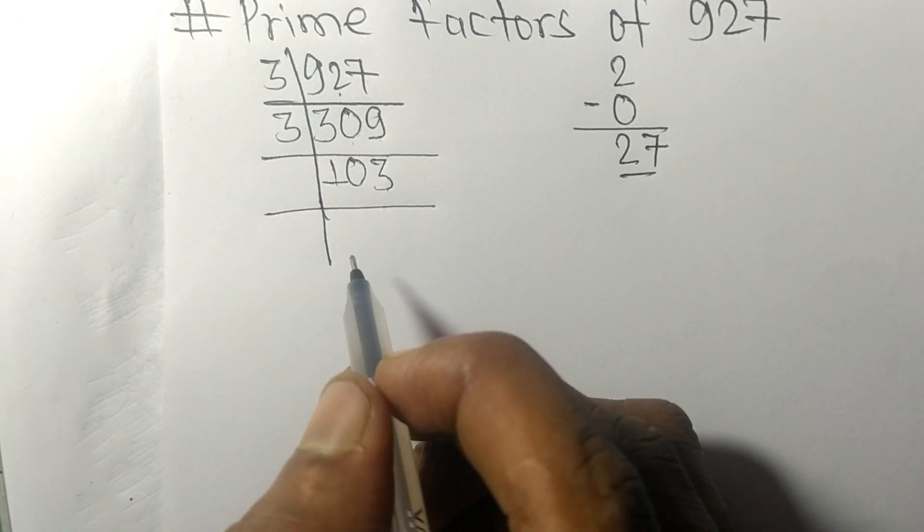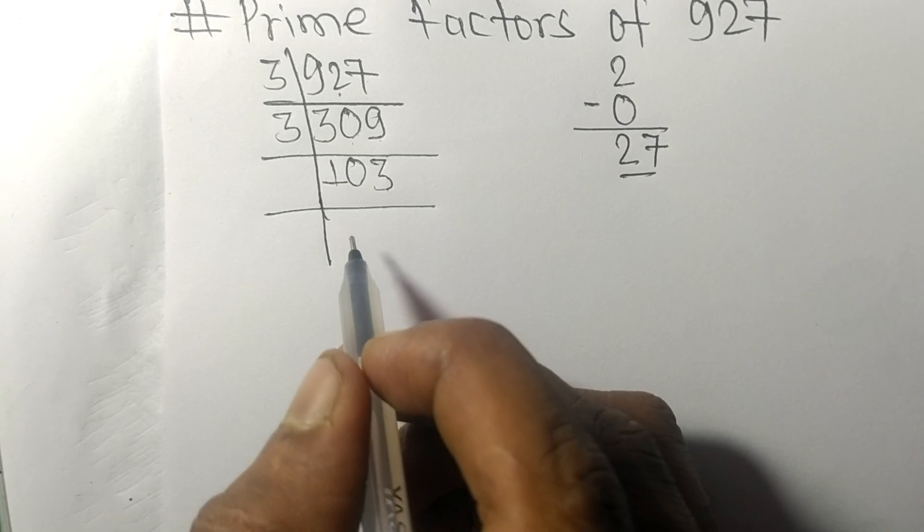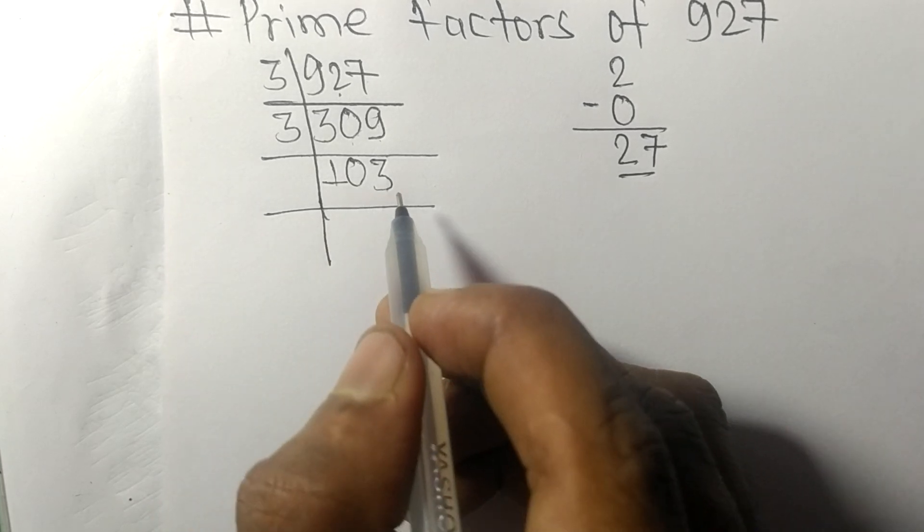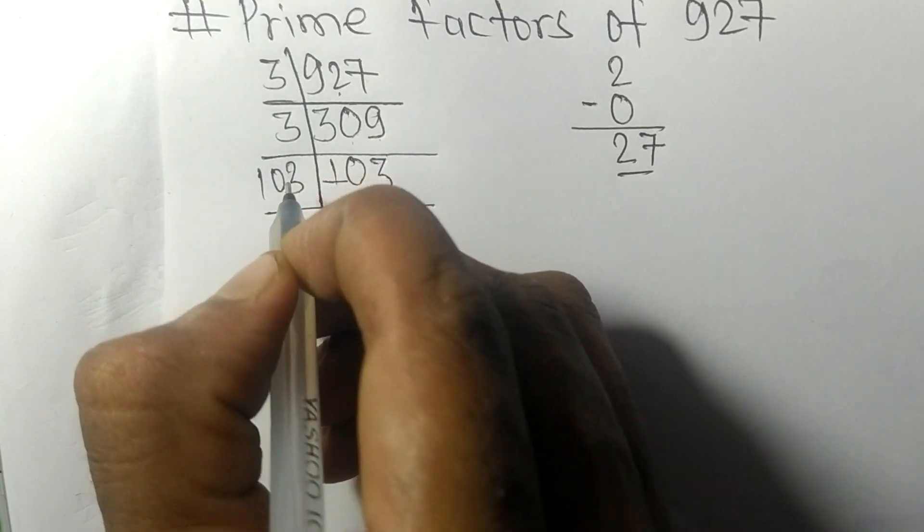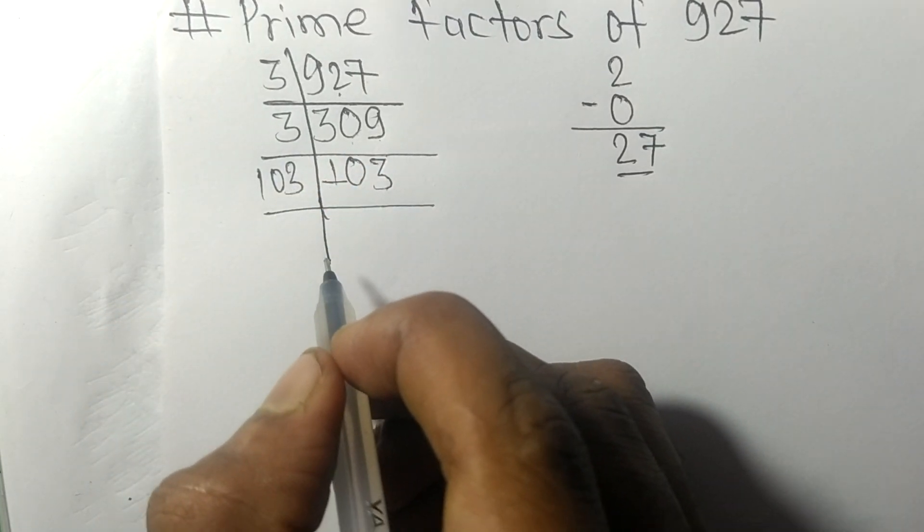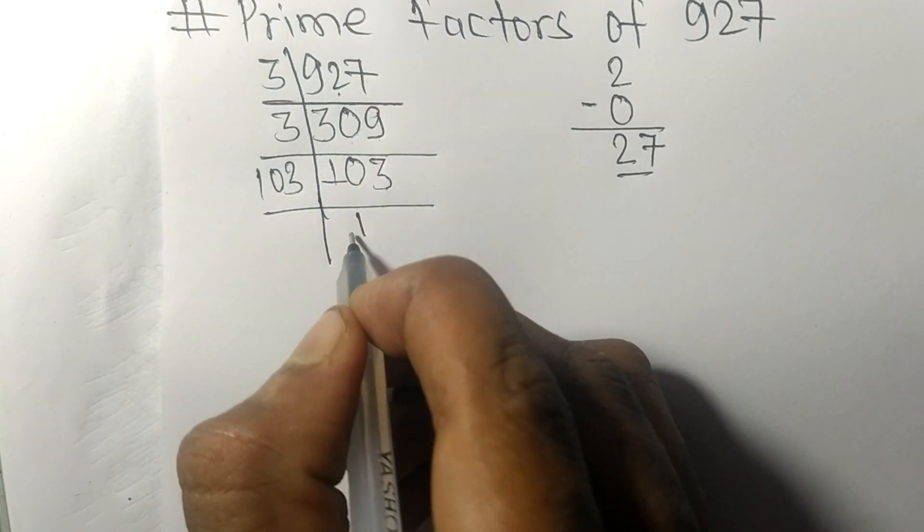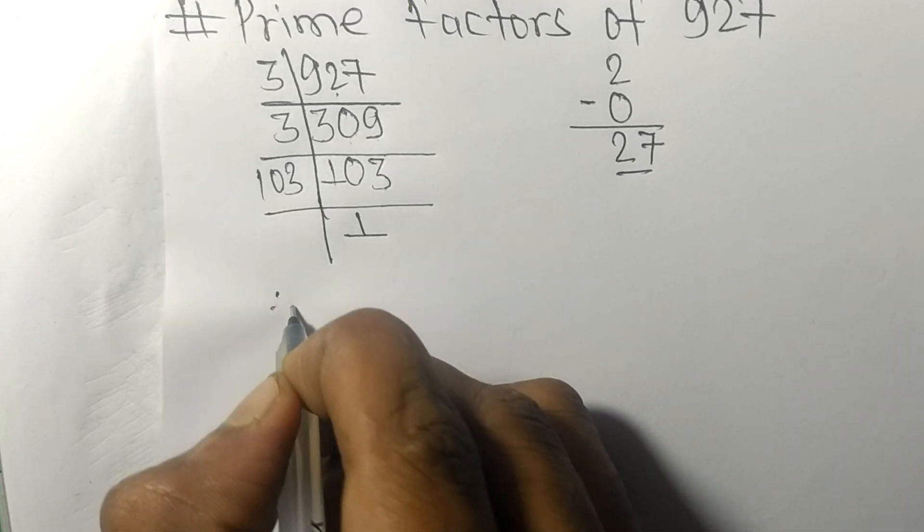which is a prime number, so it is exactly divisible by 103 only. And on dividing we get 1. Therefore,